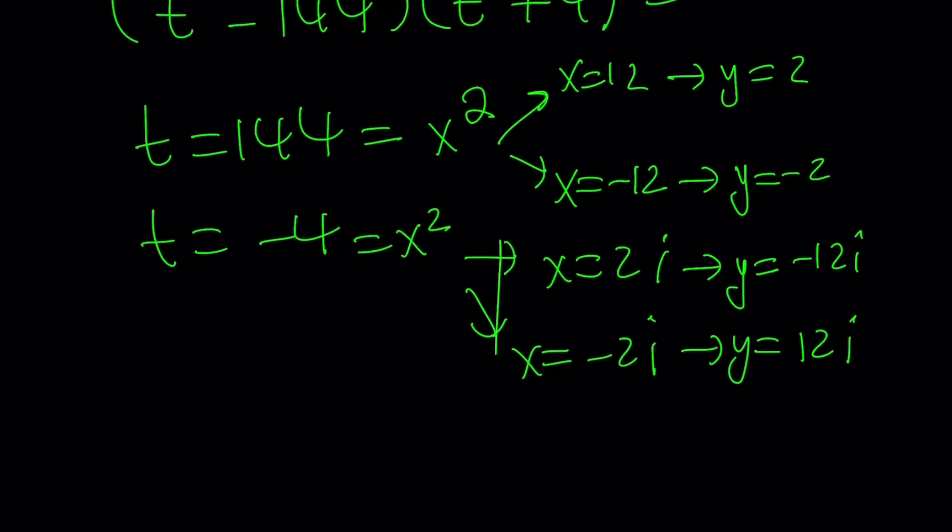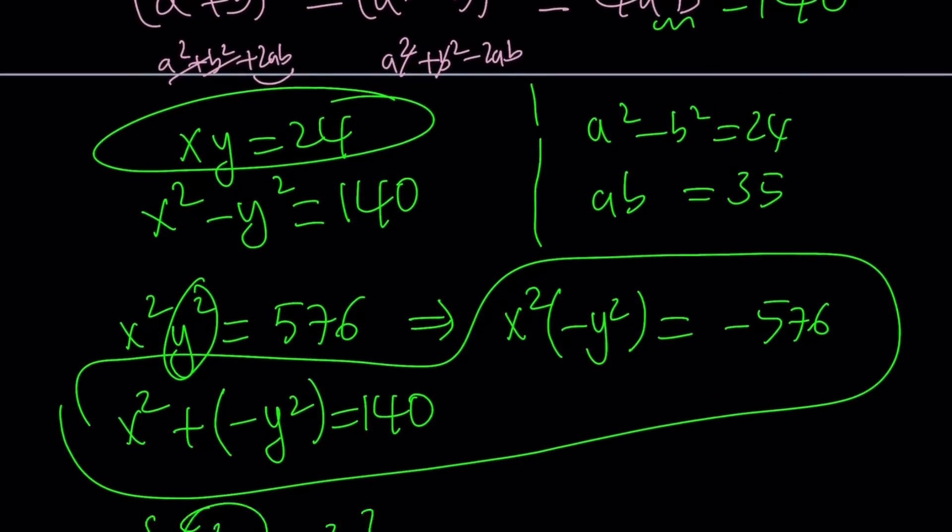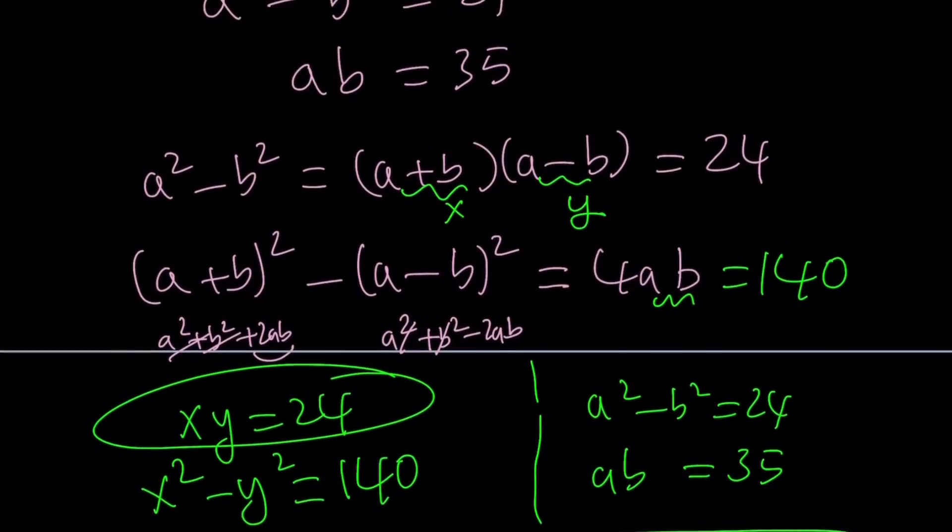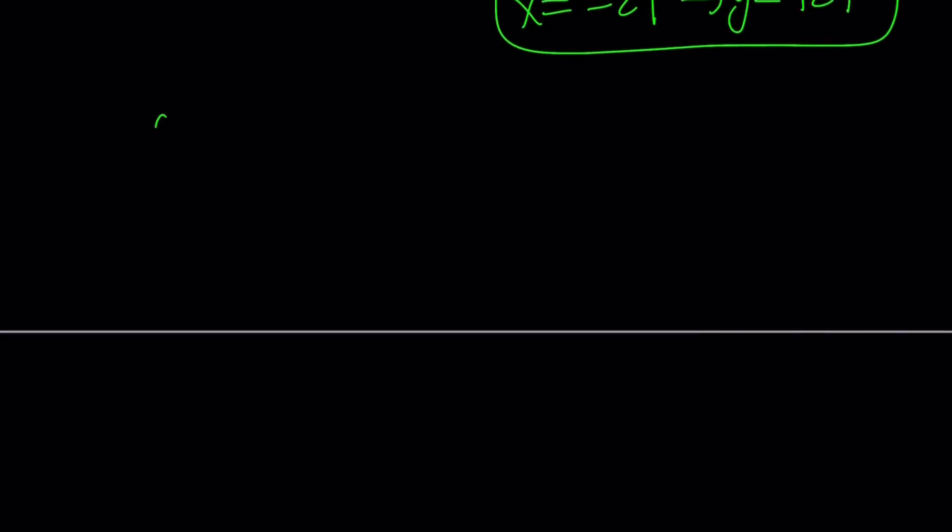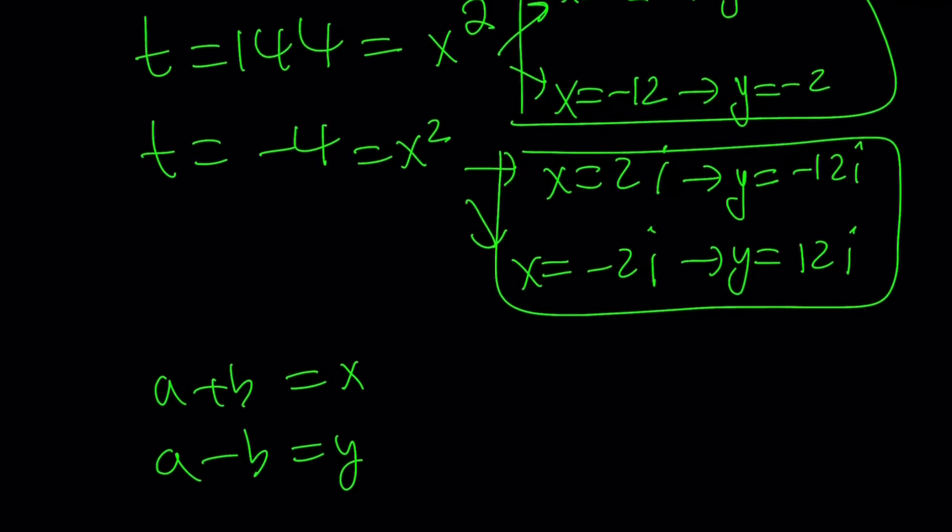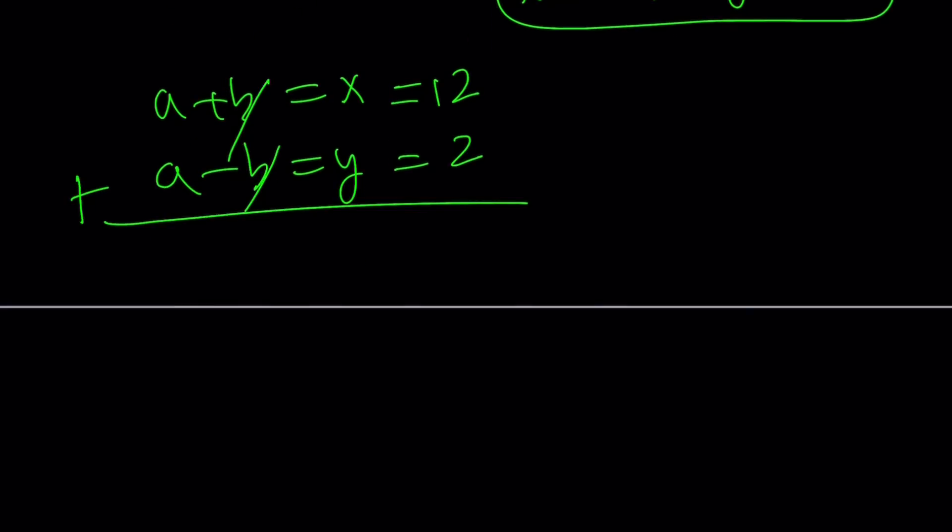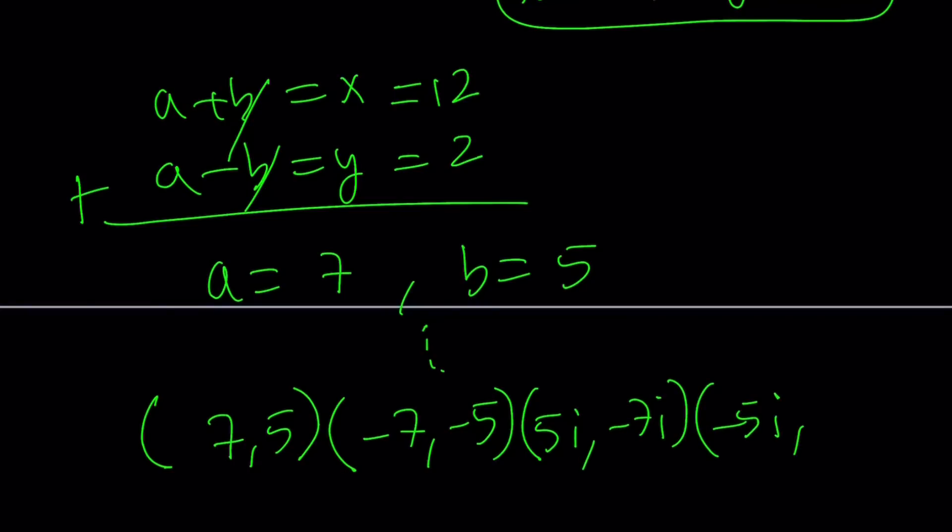Those are the solutions, but we're not looking for x and y, we're looking for a and b. We said that a plus b is x and a minus b is y. We know the x and y values. For example, if x is 12 and y is 2, then we get the following system. We can just add these up and a equals 7 and b equals 5. So we're going to get all the solutions. Let's write them as ordered pairs: 7, 5; negative 7, negative 5; 5i, negative 7i; and negative 5i, 7i.